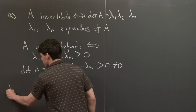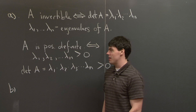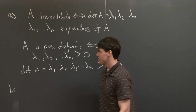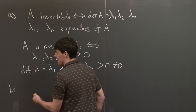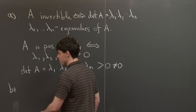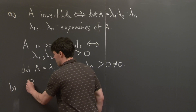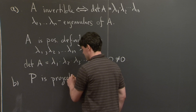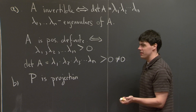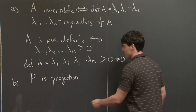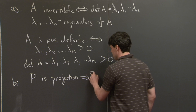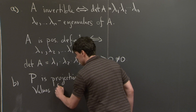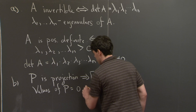For part B, we're asked to show that the only positive definite projection matrix is the identity matrix. We're going to look at the eigenvalues. Remember, if P is a projection, what does it say about the eigenvalues of P? The eigenvalues of P are either 0 or 1.